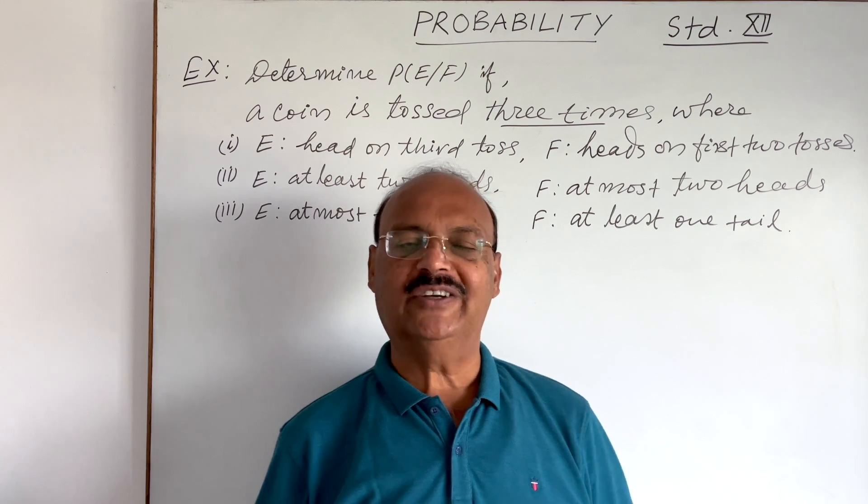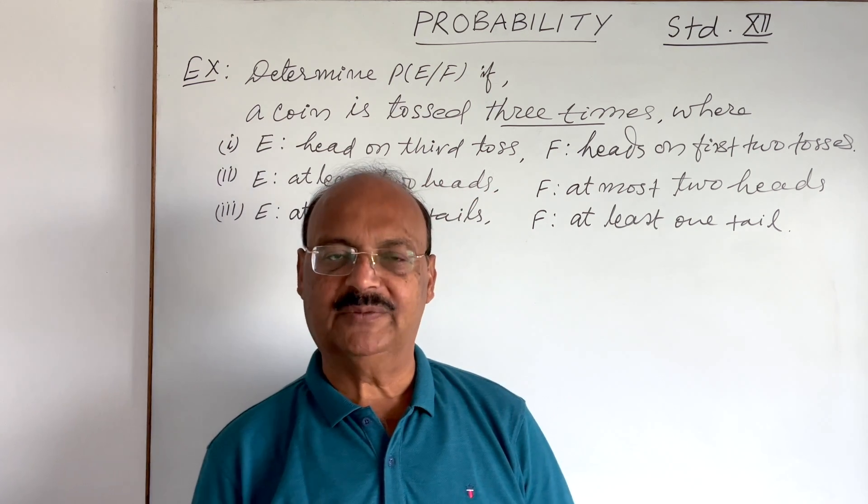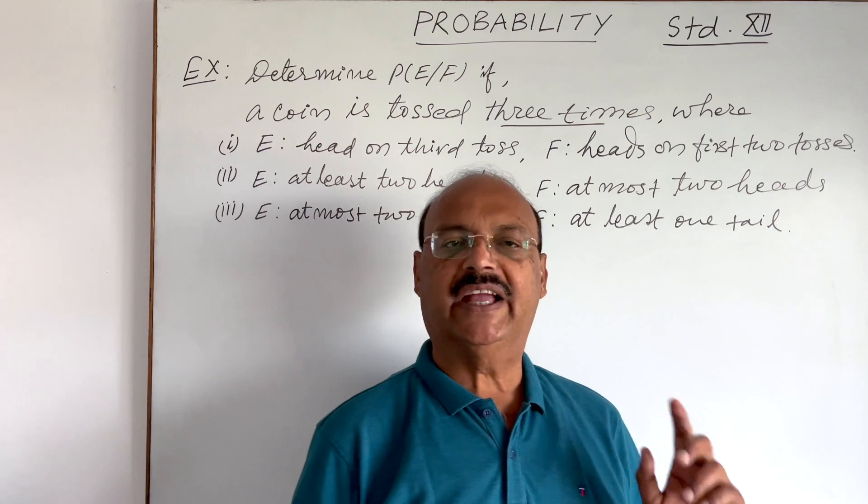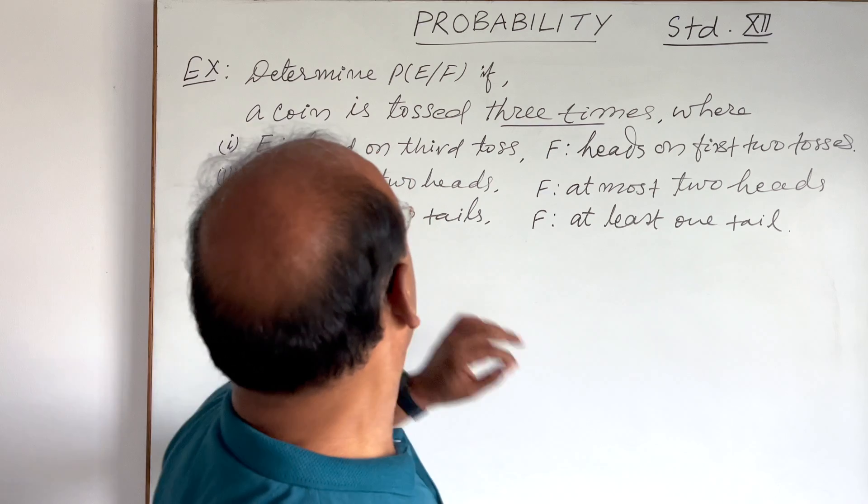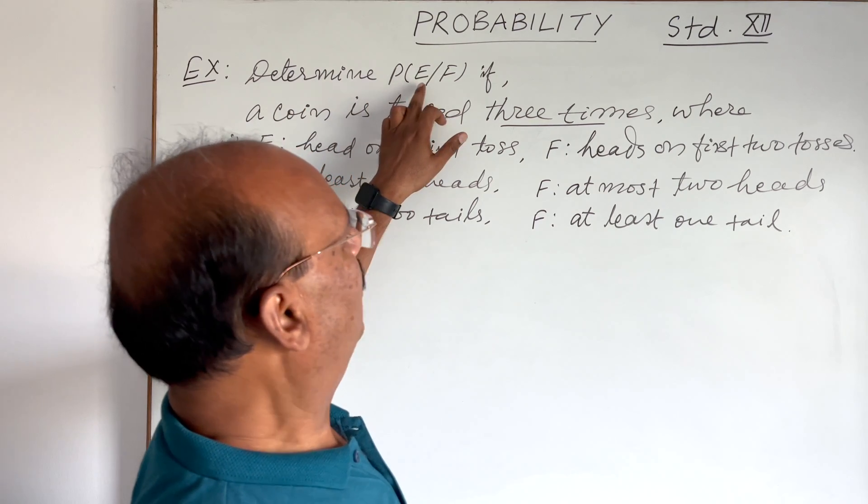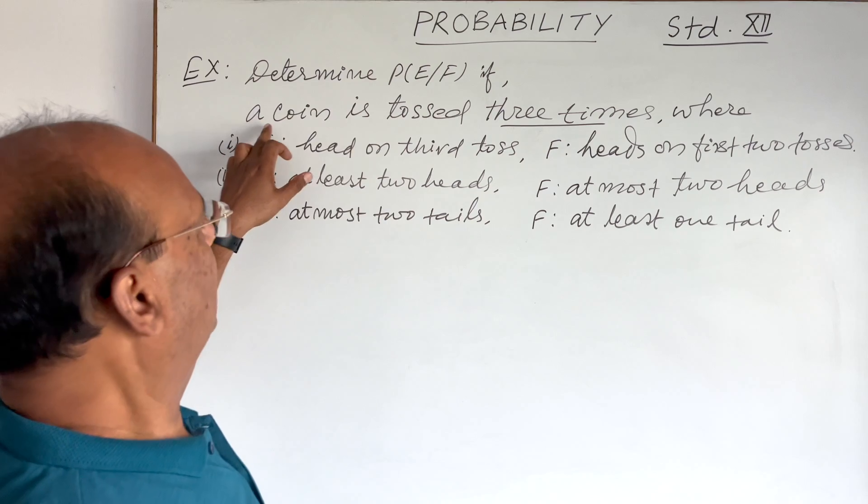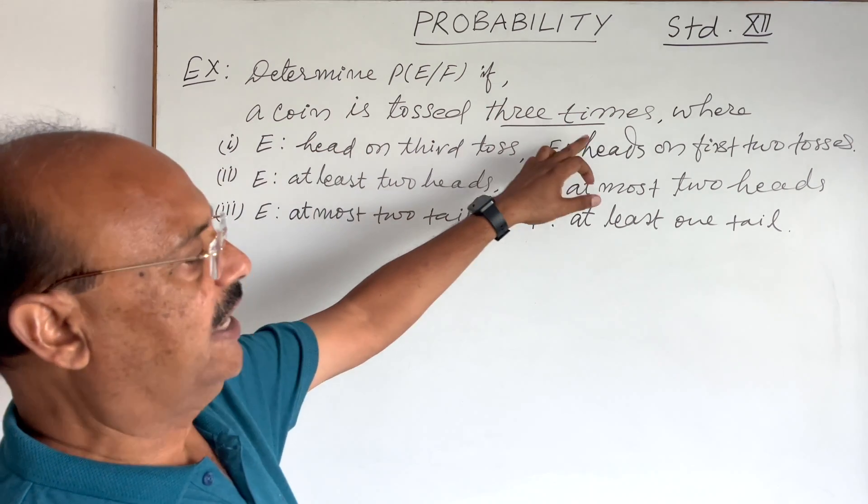Welcome students, let us see an important question from the chapter probability. Question has been taken from NCERT book of Standard XII. Here the question is, determine probability of E conditional to F if a coin is tossed three times.